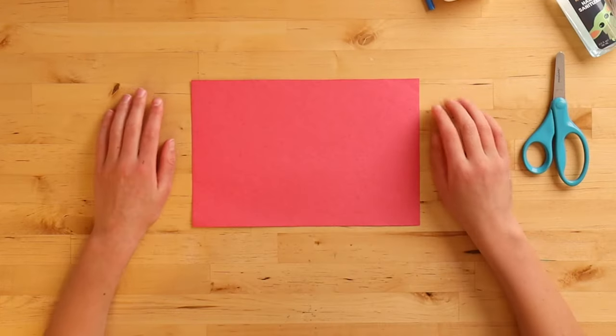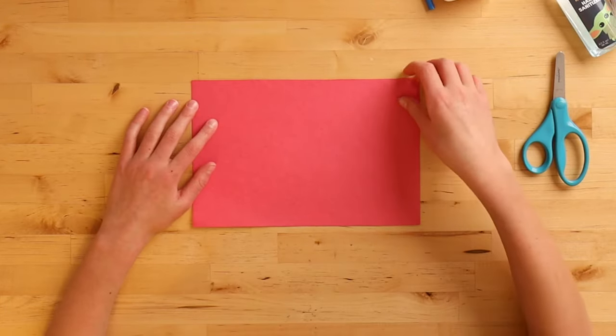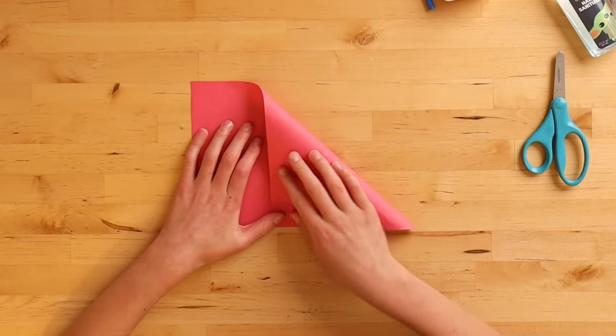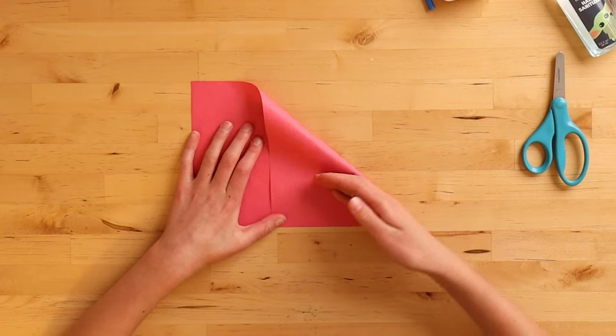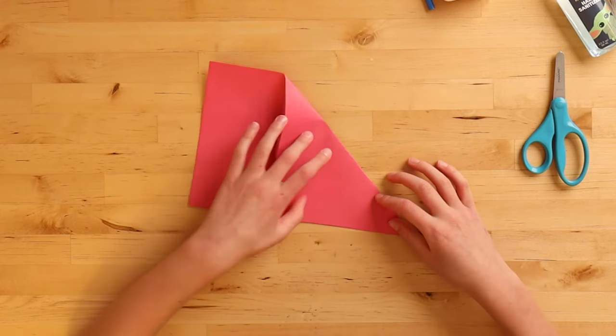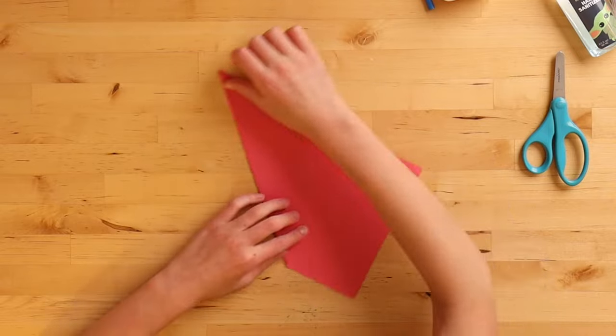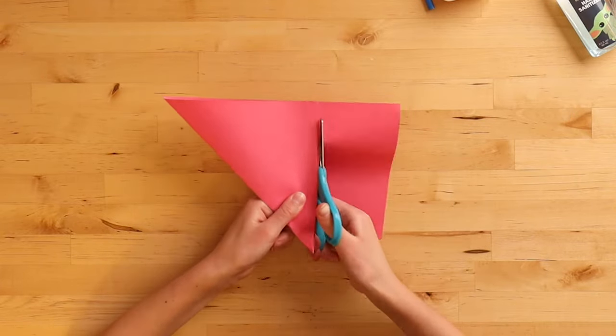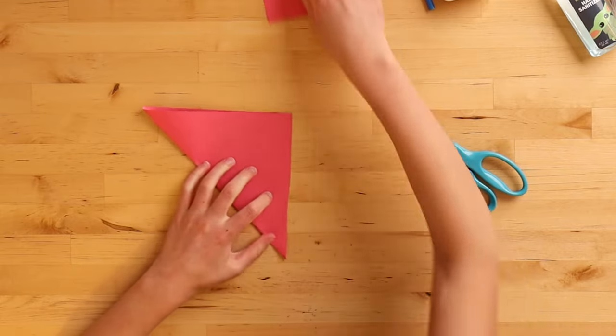We're going to put one piece aside. Now we have to make this into a square. So how we do that is we fold this along the edge of the bottom and make it into a triangle shape, and we make the crease, and we cut off the excess.